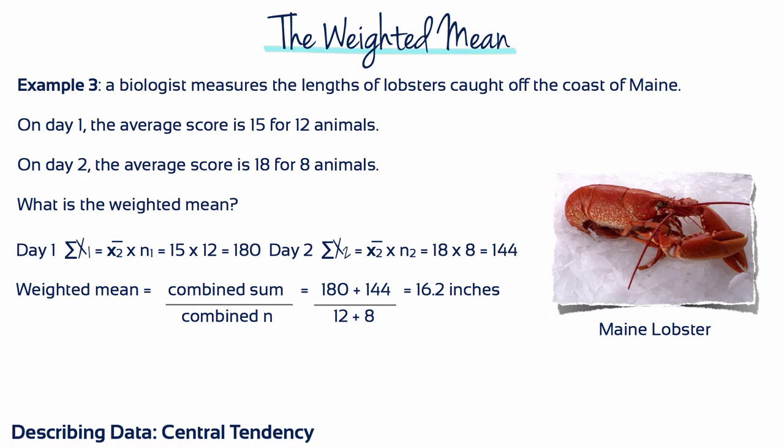On day one, the biologist caught 12 lobsters with an average length of 15 inches, so sigma x1 equals 180. On day two, they caught eight lobsters with an average length of 18 inches, so sigma x2 is 144. The weighted mean is 180 plus 144 divided by 12 plus 8, which is 16.2.